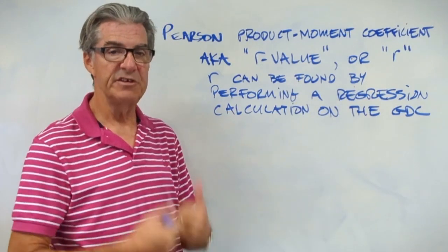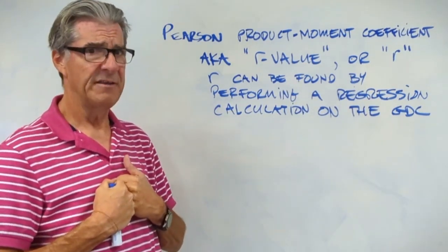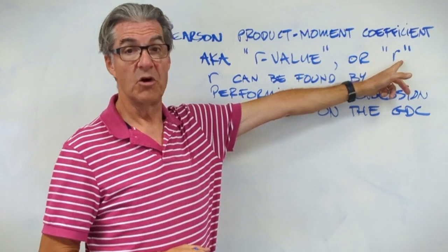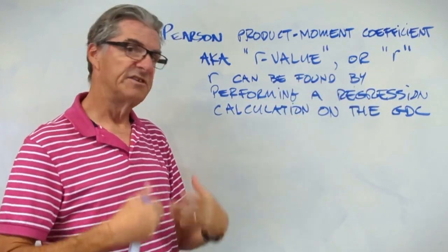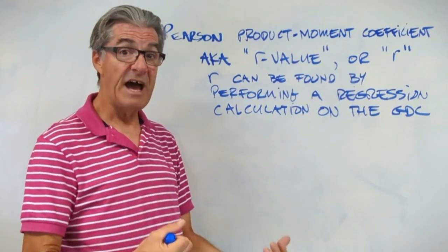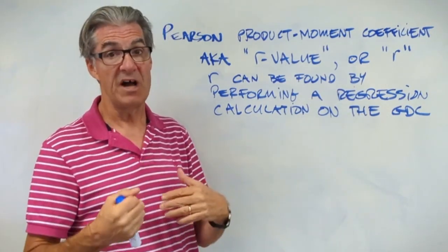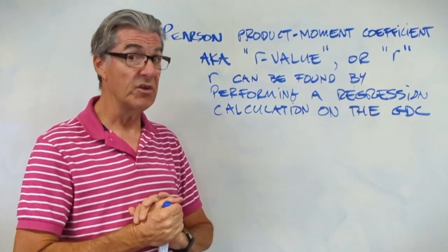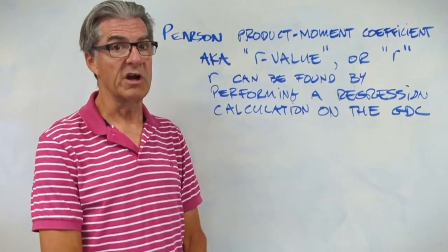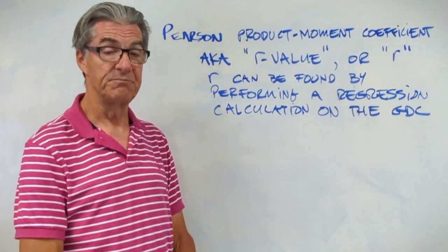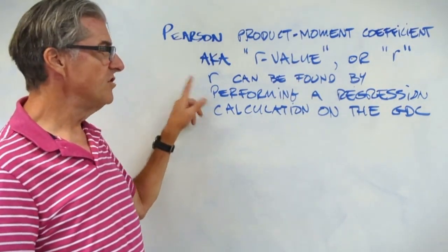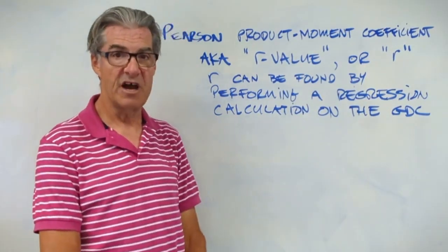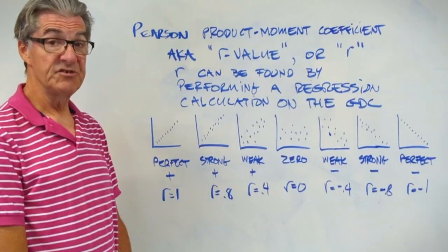Welcome to the Pearson product moment coefficient. Boy, that's a mouthful — good thing we have a shorthand for that. It's also called the R value or just simply lowercase r. This number is calculated based on a data set, and it will allow you to say whether the correlation is negative or positive and just how strong it is. And remember, correlation is not necessarily causation — it's an important step, but you have to do more work to actually figure out whether you have causation. R can be found by performing a regression calculation on your GDC or your graphing display calculator. We'll get to that in a moment. Let's look at some graphs.